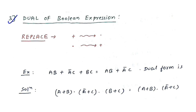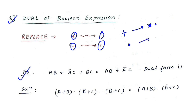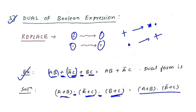An important concept for GATE: the dual of a Boolean expression. To find the dual, replace addition with multiplication and multiplication with addition. Example: the consensus theorem AB + ĀC + BC = AB + ĀC. Its dual is found by swapping all + and ·, giving (A+B)·(Ā+C)·(B+C) = (A+B)·(Ā+C).